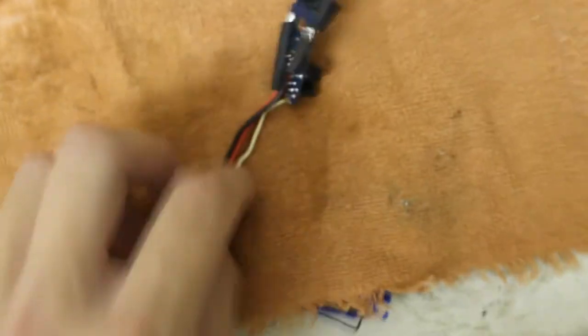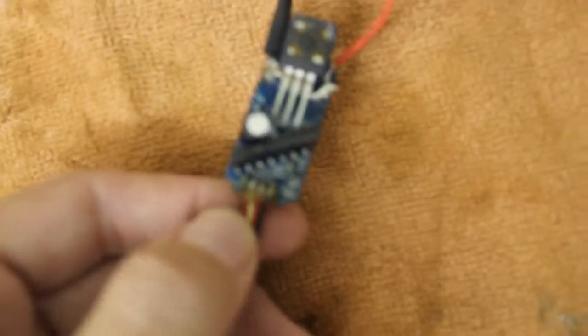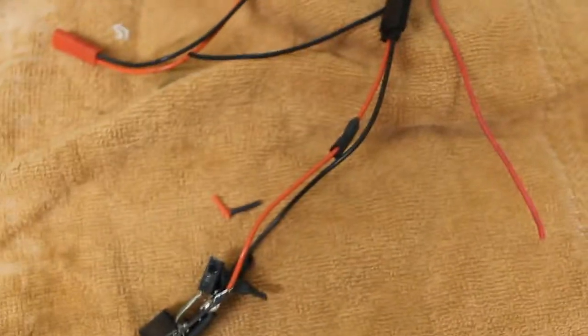So you just take the guts out, which are right here, and then I soldered on two of these wires that I just had. Cut one off of here and had another just laying around.